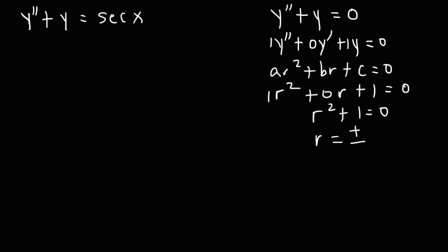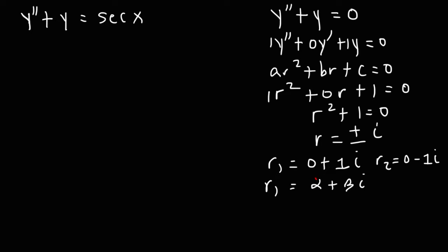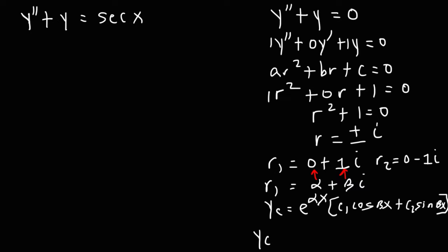Solving for r, we get r equal to plus or minus i. So r1 is 0 plus 1i and r2 is 0 minus 1i. In the form alpha plus beta i, alpha is 0 and beta is 1. The general solution for the homogeneous equation is yc equal to e to the alpha x times (c1 cosine beta x plus c2 sine beta x). Since e to the 0 is 1, we get yc equal to c1 cosine x plus c2 sine x.